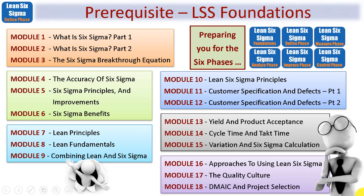First you need to be aware that there is a prerequisite to this Define Phase. We've designed this master series within six phases, not five. The reason for that is that we have an additional first step called Lean Six Sigma Foundations. It's important that you must have gone through those 18 modules and topics as a prerequisite before you can start the first of the five DMAIC phases — this one called the Define Phase.